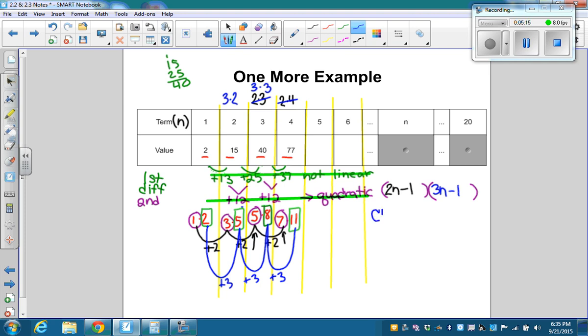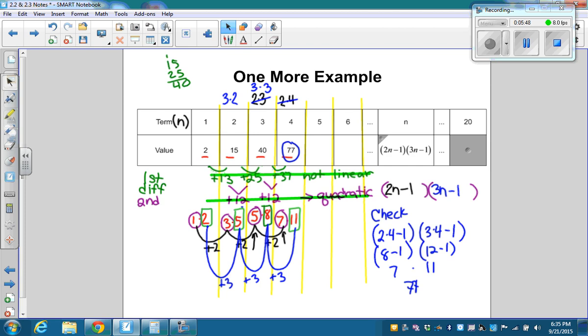So now I'm going to check one other way. I'm going to check by plugging in 4. 2 times 4 minus 1, times 3 times 4 minus 1. That's 8 minus 1, which is 7, and that's 12 minus 1, which is 11. 7 times 11 is 77. So that's what I was trying to get. That's my answer.